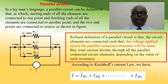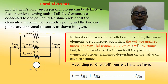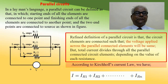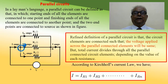A refined definition of a parallel circuit is that the circuit elements are connected such that the voltage across all parallel-connected elements is the same, but the total current divides through all parallel-connected elements depending on the value of each resistance. Applying Kirchhoff's current law to a junction, total current I = IR1 + IR2 + ... + IRn.